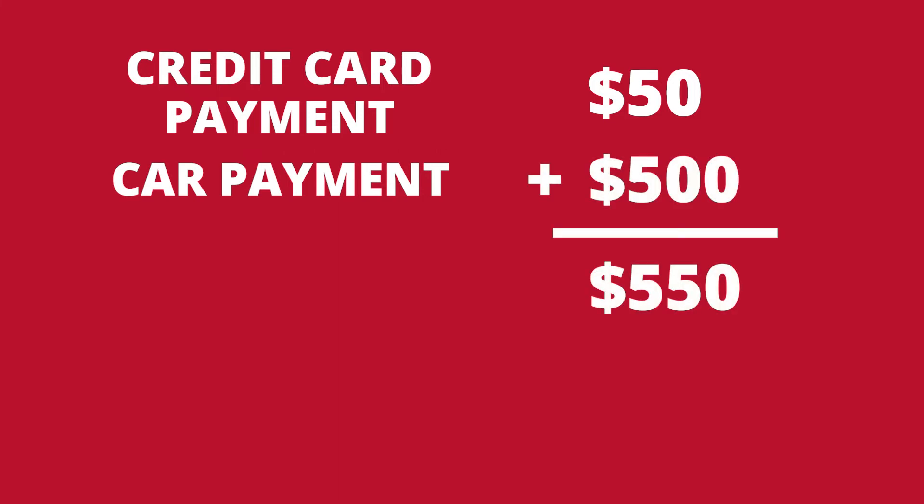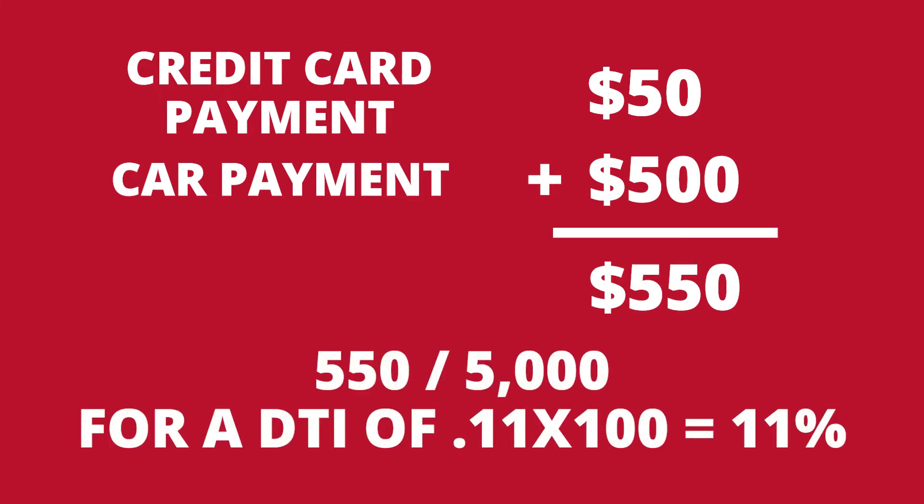To calculate your DTI — your debt-to-income ratio — you would take $550 and divide it by $5,000, for a DTI of 0.11, then multiply by 100 for an 11% debt-to-income ratio. Depending on your loan program and loan type, that will dictate your maximum debt-to-income ratio.